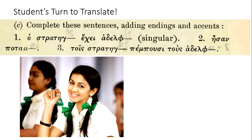I want you now to have your own turn as a student to translate. Go ahead and fill out on a piece of paper the answers you think should be required for the challenge of completing the following sentence by adding the endings and the accents. We will meet again next time for the second lesson, which will continue our discussion of the O declension. Thank you so much — really enjoying this series so far. Thank you for watching. I look forward to more.